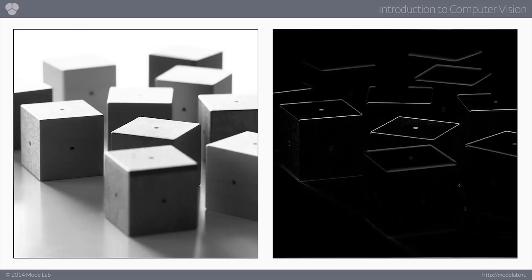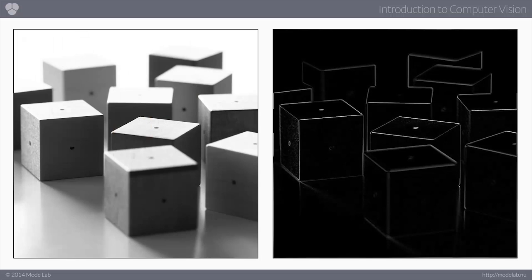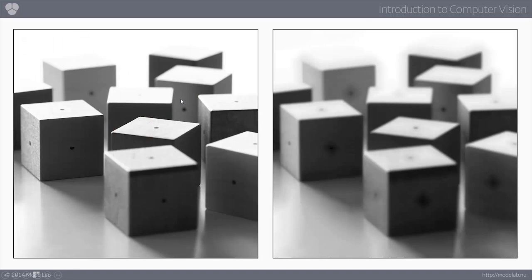We can look at the two derivatives independently: dx gives us the vertical edges and dy gives us the horizontal edges. We can then combine them together to find all of the edges. So by combining those two images, we can determine both horizontal and vertical edges in an image. That's the essence of edge detection.